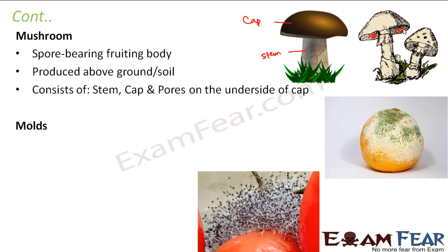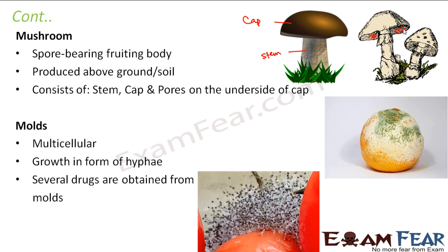The third one would be molds. Now, you remember while I was talking about Protista, I told you that slime molds — even though the name is molds — are not under fungi; they are under Protista. The molds are actually under fungi. They are multicellular and grow in the form of interconnected hyphae. Several drugs are obtained from molds. One of the best examples would be penicillin — the antibiotic penicillin is obtained from a mold.